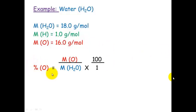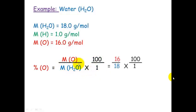To work out the percentage of oxygen, we work out the molar mass of oxygen divided by the molar mass of the entire compound, which is water, times 100. So the molar mass of oxygen is 16 divided by 18, times 100, which equals 89%.